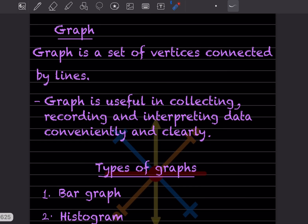What do you mean by graph? Actually, a graph is a set of vertices connected by lines. The vertices - suppose this is one point and this is one point, and then it is connected by this line. Graph is useful in collecting, recording, and interpreting data conveniently and clearly.